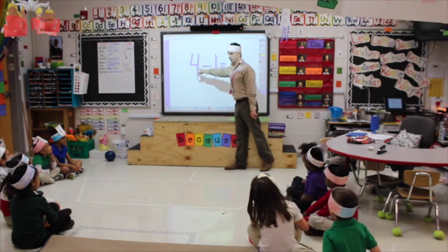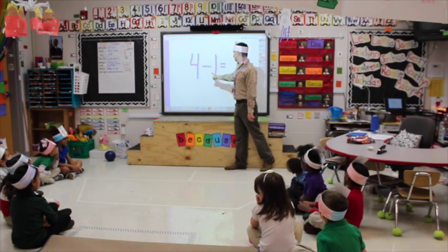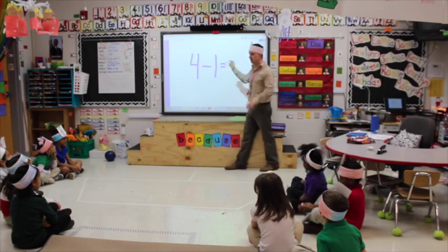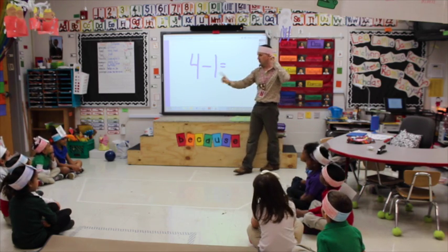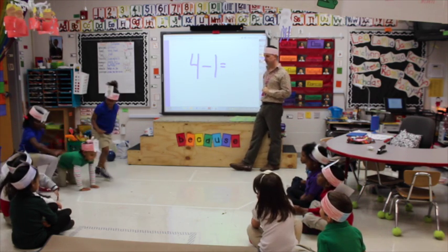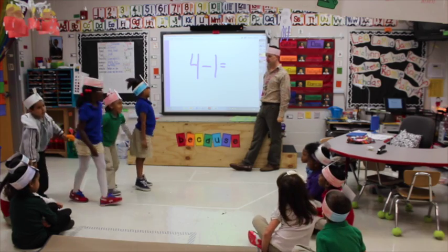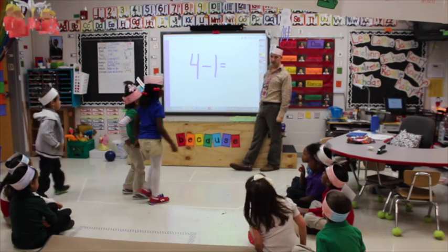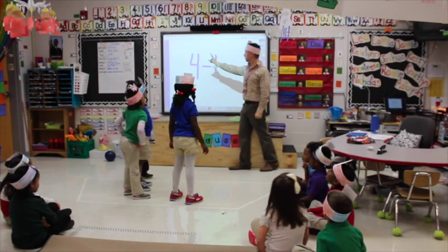Four minus one equals... So how many people are getting on my boat? Four. One, two, three, four. How do you count that fast? Lots of practice. One, two, three, four. Here we go.